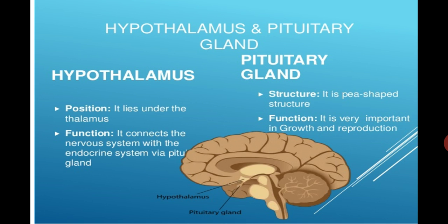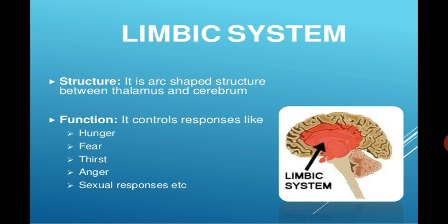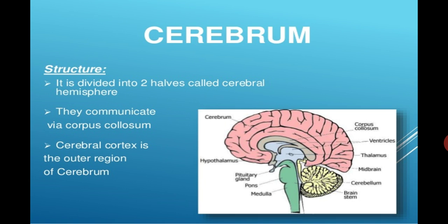Now what is the limbic system? Here you're watching the portion in red color, it is representing the limbic system. It is the arc-shaped structure between the thalamus and the cerebrum. It controls responses like hunger, fear, thirst, anger, and sexual responses.